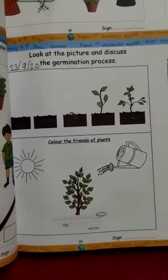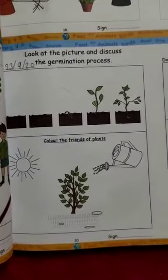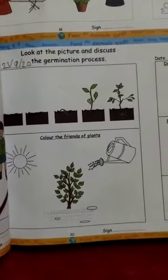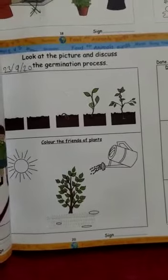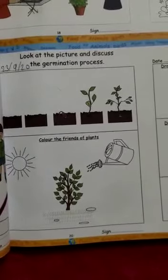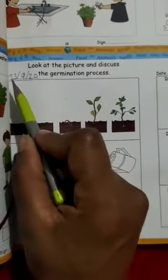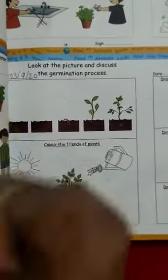Students got this page. First of all, tell me what is the date today. 23, 9, 20. So write here: 23 is the date, 9 is the month, and 20 is the year.